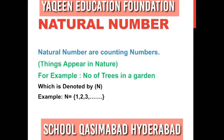Things appear in nature. I will give one example — number of trees in a garden. If you go to a garden, how many trees are there? Where do you start counting?